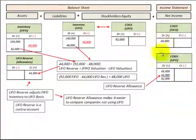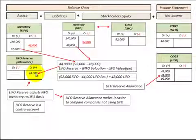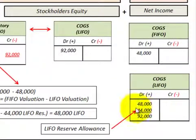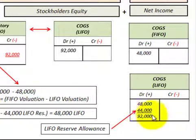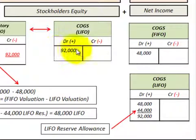We can also adjust our cost of goods sold from FIFO to LIFO. We take the $44,000 credit on our LIFO reserve and balance it with a $44,000 debit to cost of goods sold. Adding this $44,000 to our FIFO cost of goods sold of $48,000, we get $92,000 — the cost of goods sold on a LIFO basis, which matches what we previously calculated.